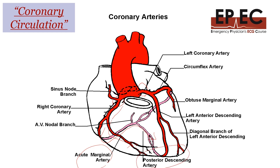One of the first branches of the right coronary artery is the sinus node branch. The blood supply to the SA node comes from the proximal end of the right coronary. That's why proximal occlusion of the right coronary can result in sinus bradycardia due to ischemia of the SA node.